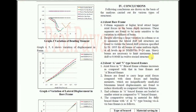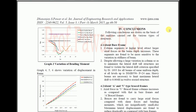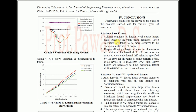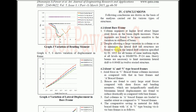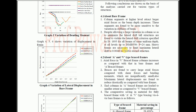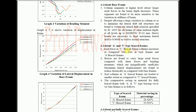The following conclusions are drawn: frame column segments at higher levels attract larger axial forces, and as beam depth increases, these segments are more sensitive to variation in beam stiffness. Tall structures are found to violate the lateral drift criteria specified by IS 1893 for all beams of uniform depth up to MB 550 with plate thickness 25 mm. Heavier beams are necessary to limit maximum lateral drift to 0.004H in 12-storey structures.